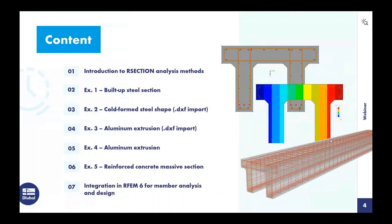I'll quickly go through the content we will cover over the next hour. I'll begin with a brief introduction to R Section and the analysis methods available. We'll then move on to several examples: first, a built-up hot rolled steel section; second, a cold-formed steel shape where we import a DXF file; third, an aluminum extrusion importing a DXF file; fourth, an additional aluminum extrusion; and fifth, a reinforced concrete massive section. After calculating cross-section values, we'll integrate them into our FEA program RFEM for full member analysis and design.